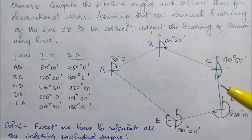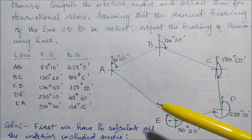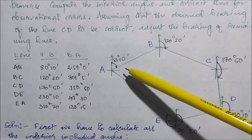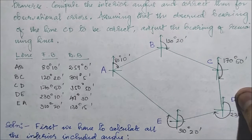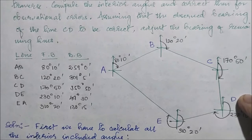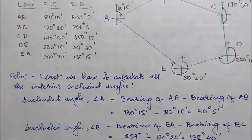In order to compute the interior angles, we require a formula. The included angle is given by the bearing of the previous line minus the bearing of the next line. Let us continue with the problem. First, we have to calculate all the interior angles.